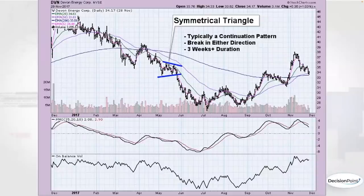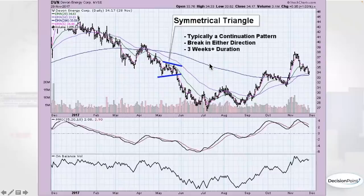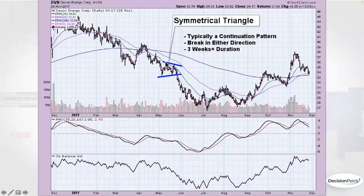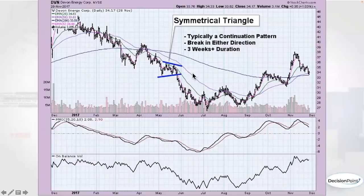The next one is the symmetrical triangle, and you'll notice there can be a breakdown from this. A lot of people think symmetrical triangles are bullish, but they can break either way. The idea is that it's a continuation pattern — a continuation of whatever the previous trend was. More than likely you're going to see the prior trend continue as the direction of the break. If you're looking at a symmetrical triangle at the top of a rising trend, expect it to move even higher.